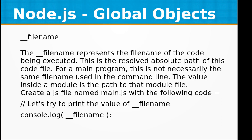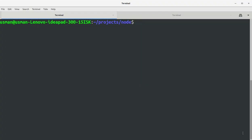The first thing we will look at is __filename. The __filename represents the file name of the code being executed — the resolved absolute path of the code file. For a main program, this is not necessarily the same file name used in the command line. The value inside a module is the path to that module file.